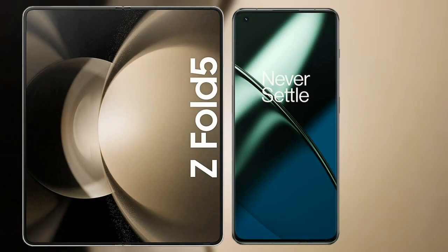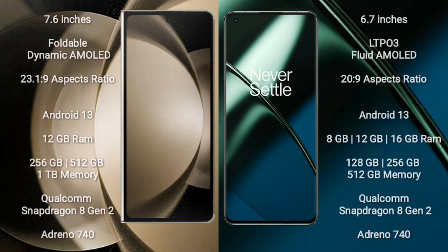I will compare the new Samsung Galaxy Z Fold 5 with the OnePlus 11. The Samsung Galaxy Z Fold 5 comes with a 7.6-inch foldable dynamic AMOLED display, while the OnePlus 11 comes with a 6.7-inch LTPO 3 flat AMOLED display.